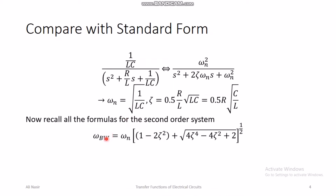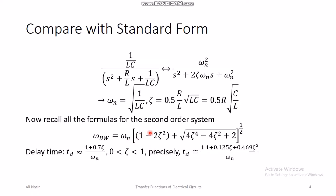For example, you can calculate the bandwidth of the circuit using the bandwidth formula from the lecture on frequency domain analysis of second-order systems. This formula gives bandwidth in terms of natural frequency and damping ratio. Once you know ζ and ω_n in terms of R, L, and C, you can calculate and adjust the bandwidth by tuning those component values.